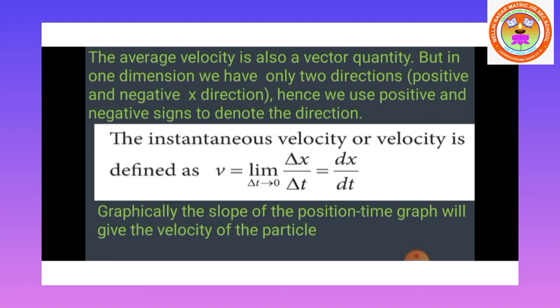The average velocity is also a vector quantity. The velocity is a vector quantity, so average velocity is also a vector quantity. But in one dimension, we have only two directions: the positive x direction and the negative x direction. Along one dimension it has two directions only — either positive or negative.